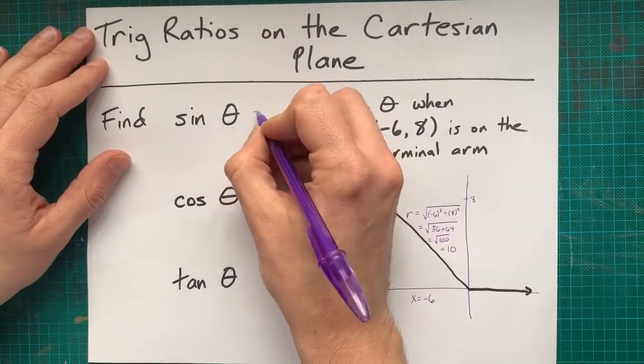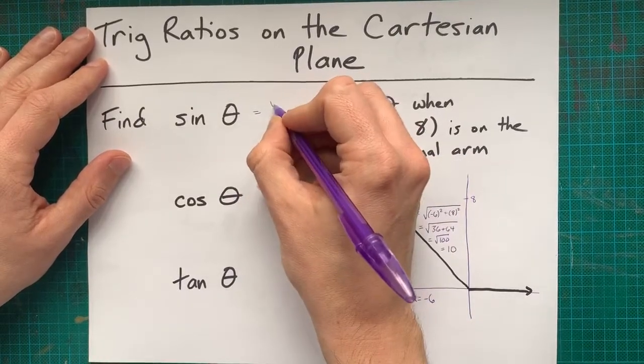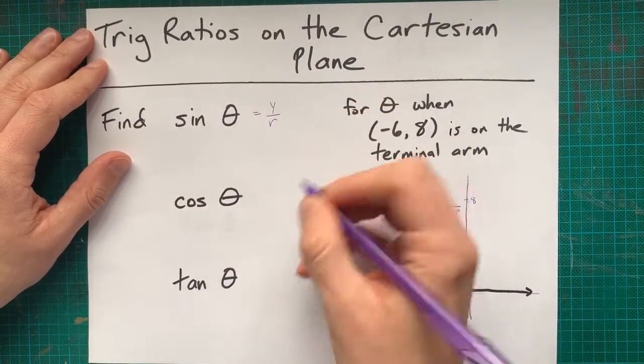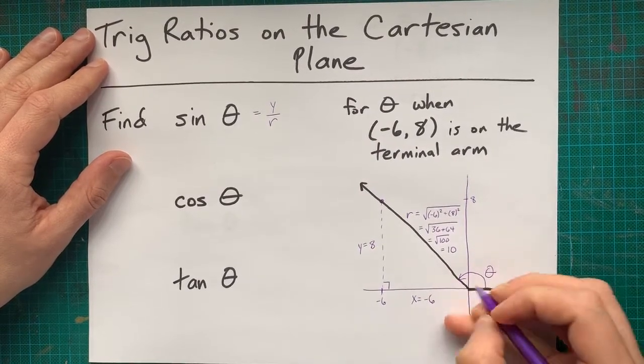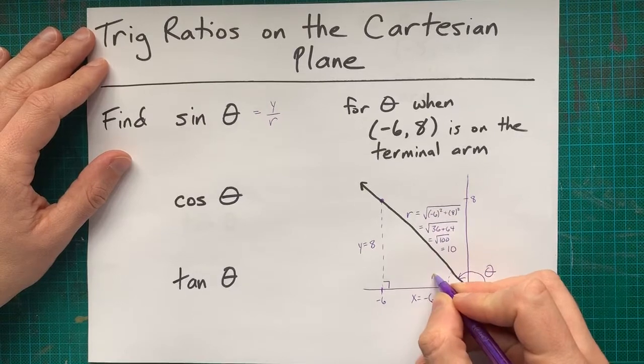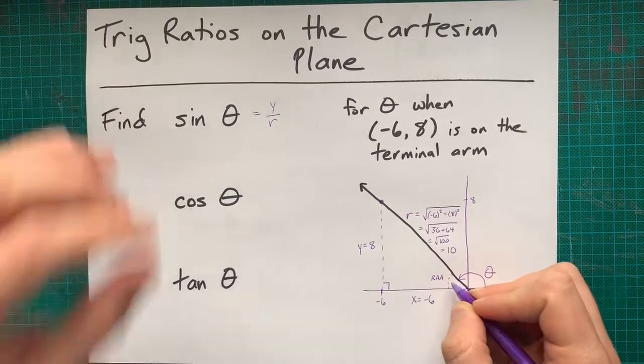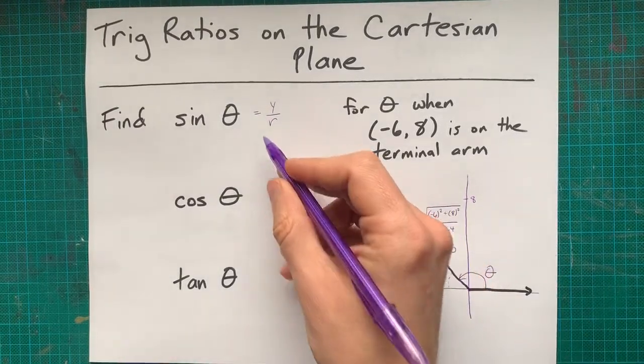This is the square root of 100, which actually gives me a hypotenuse of 10. The value of sin theta is commonly y over r, but again, if this is the value of theta in terms of the angle, this is the related acute angle that you can use to calculate these ratios.